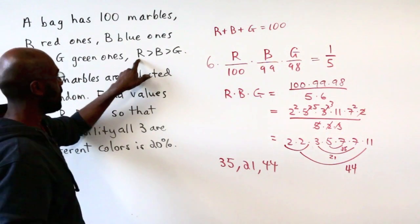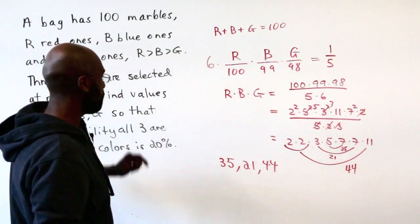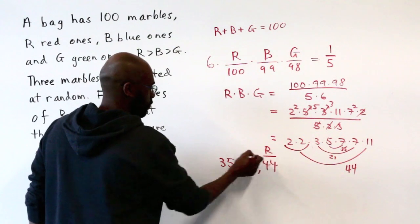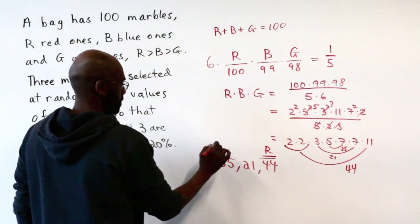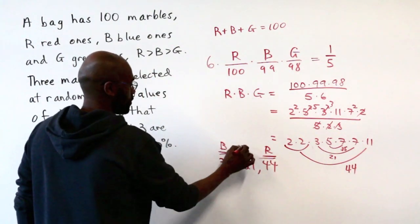And since we've dictated that there are more red than blue and more blue than green, we can assign 44 red, 35 blue, and 21 green.